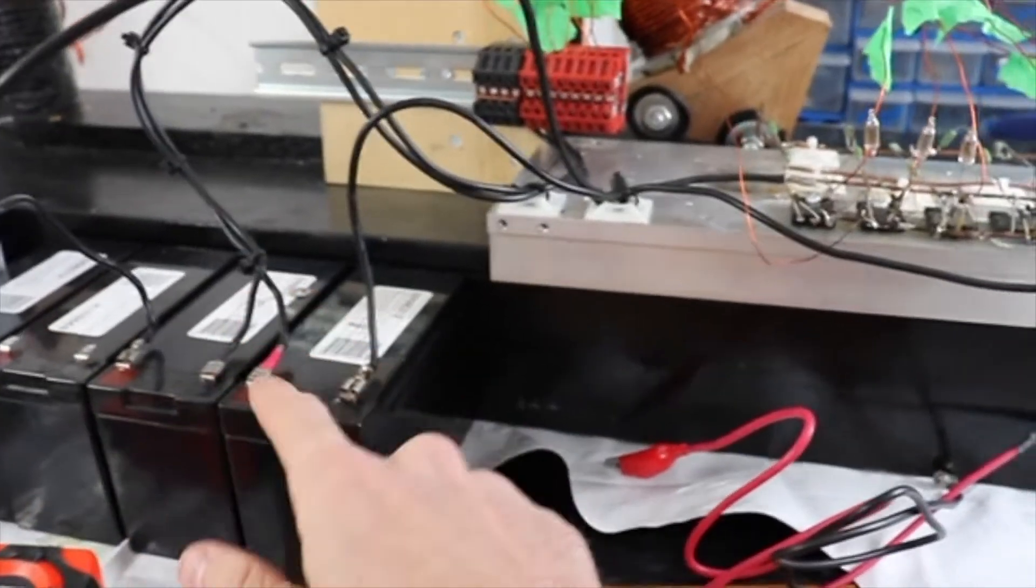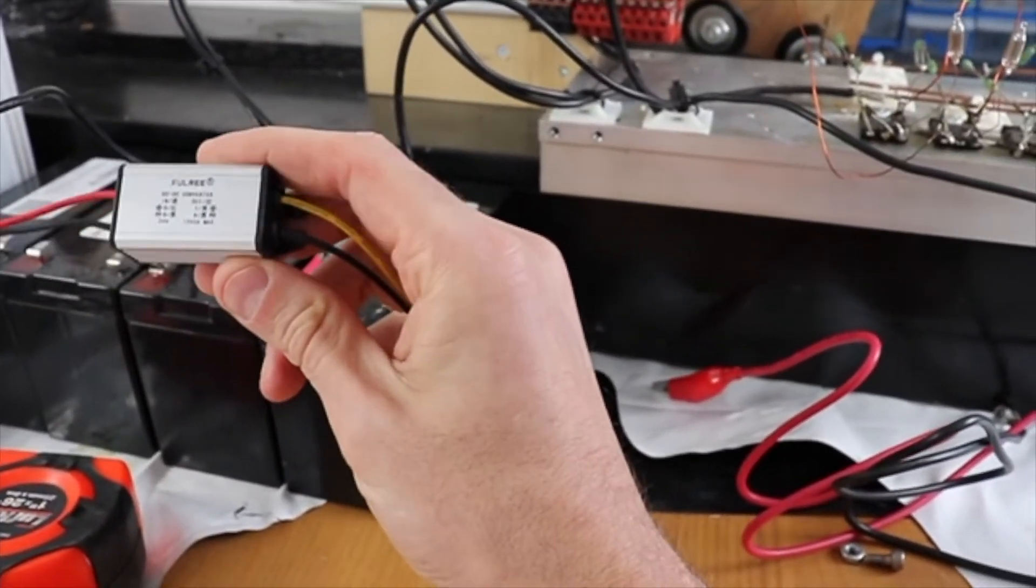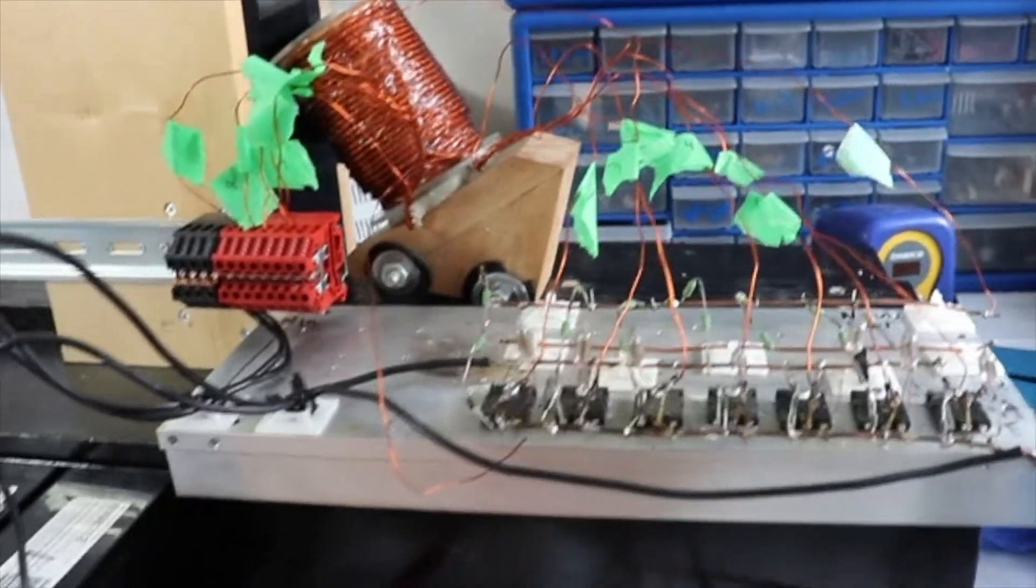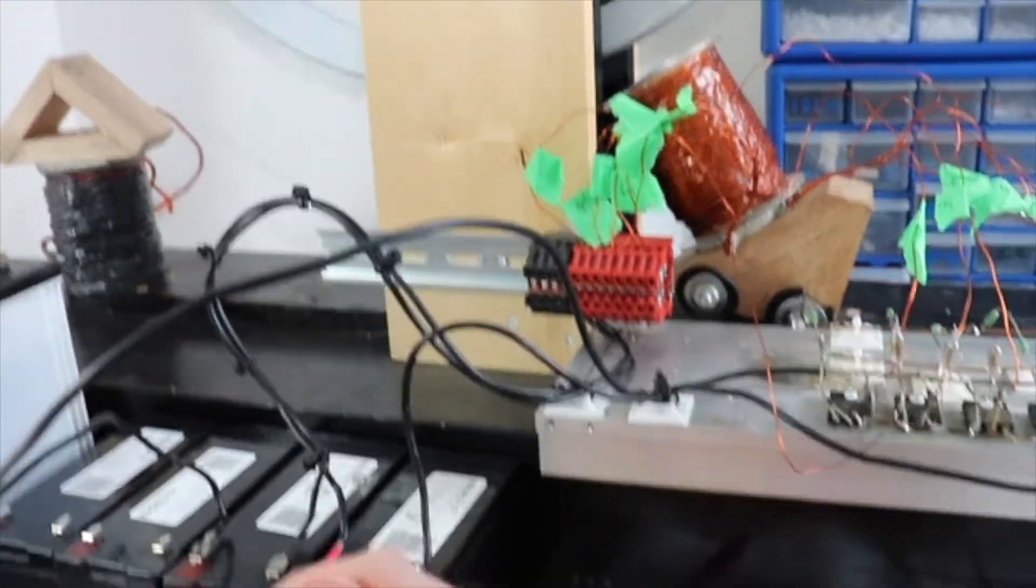Then we're going to be powering extra loads from the charge batteries, and we're going to be recharging the main battery, hopefully with this DC to DC converter. If not, I'll have to get a different battery charger. But nevertheless, I've got a few different ideas on how to definitively prove that there is excess electricity coming from this apparatus.